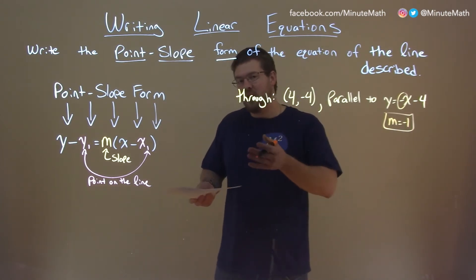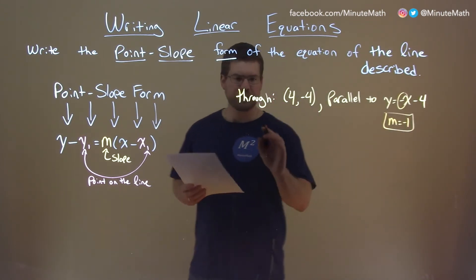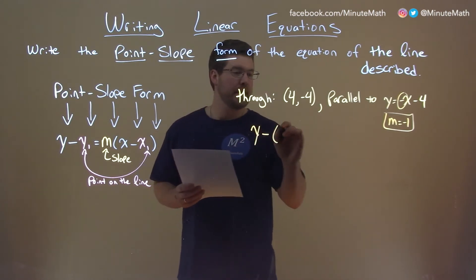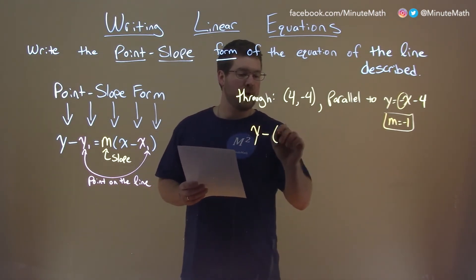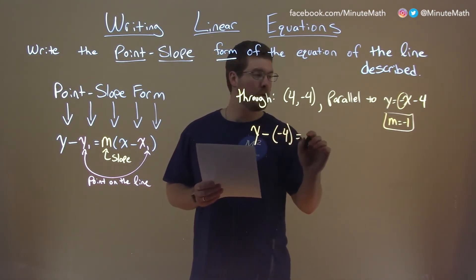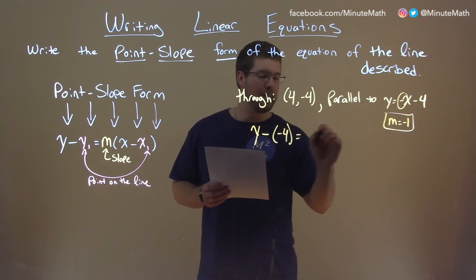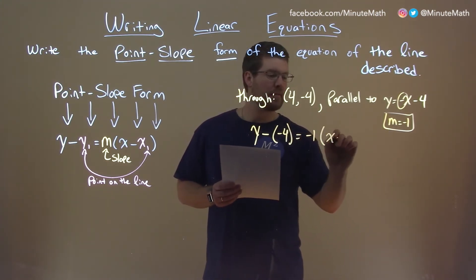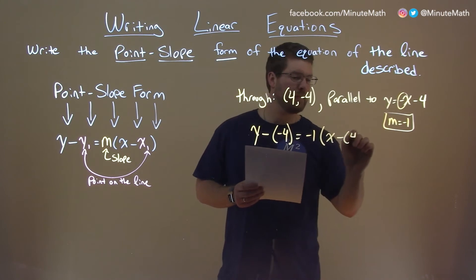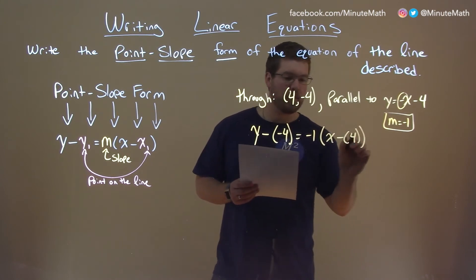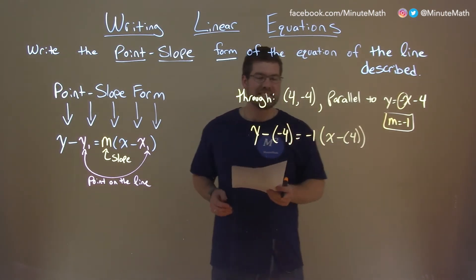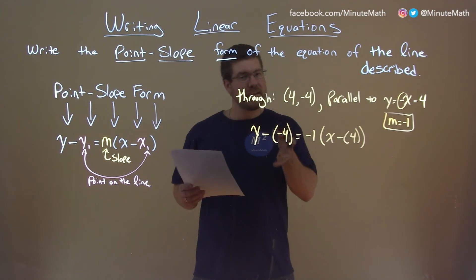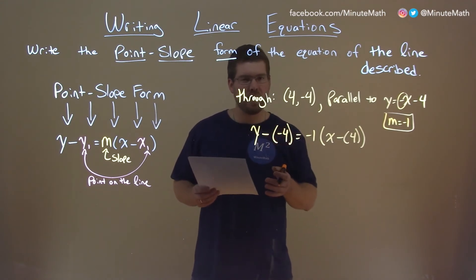We can start our journey. Using the formula, we have y minus y1, which is negative 4, equals m, our slope, negative 1, times x minus x1, which is 4. Now let's simplify this. This is already kind of point-slope form, but we can make it nicer.